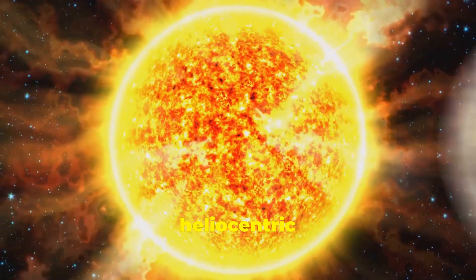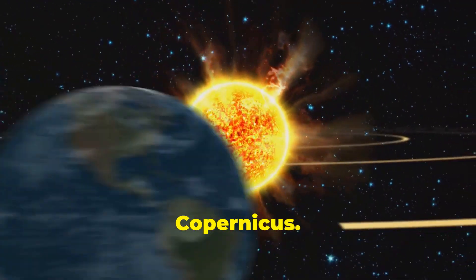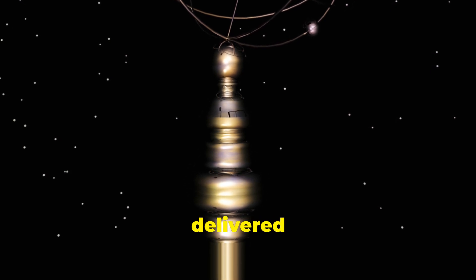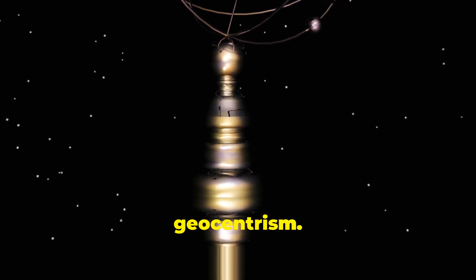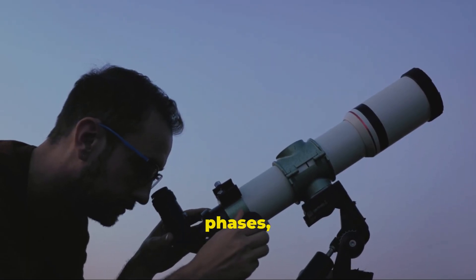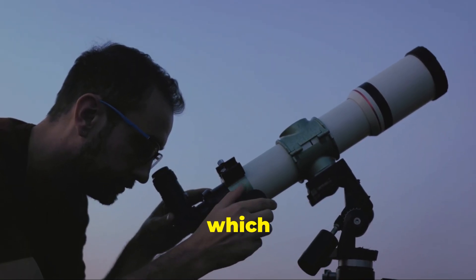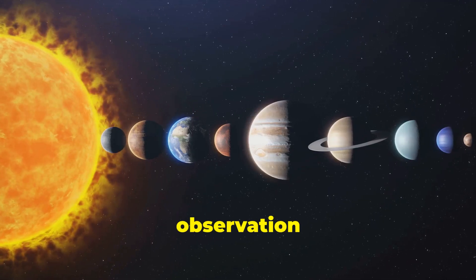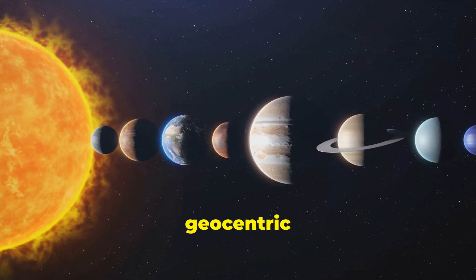By observing the phases of Venus, Galileo delivered another significant blow to geocentrism. His telescope showed that Venus exhibited a full set of phases, much like the Moon, which indicated that it orbited the Sun, not Earth. This observation was incompatible with the geocentric model but was predicted by the heliocentric model.